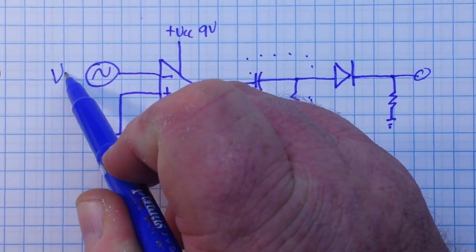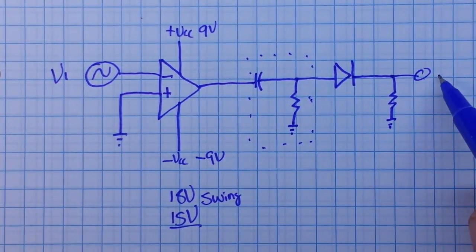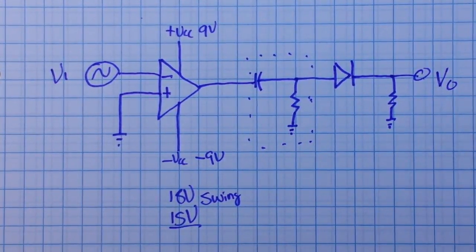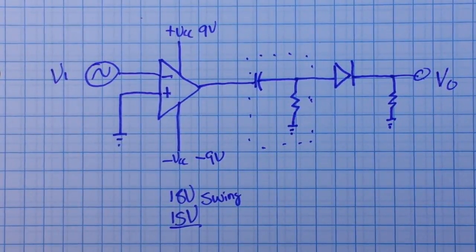So this is V in and this is V out, right? Since the op amp is in open loop configuration, the output of the op amp V out will be a positive saturation voltage whenever V in is greater than zero, and it's a negative saturation voltage.